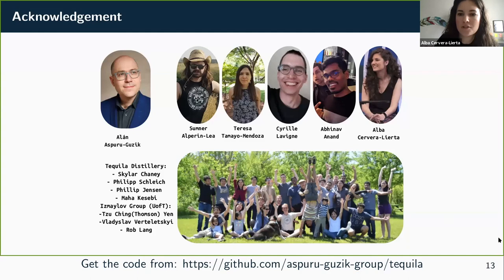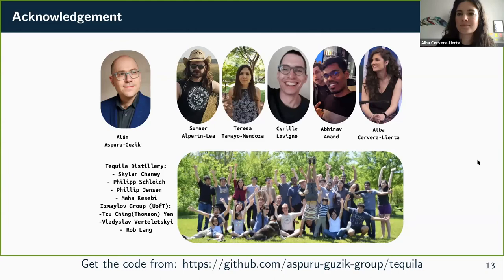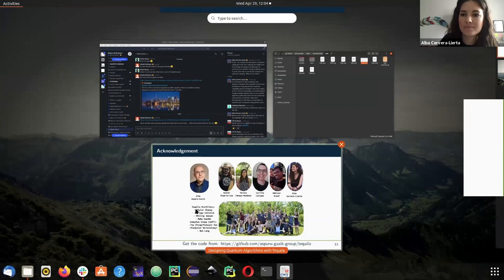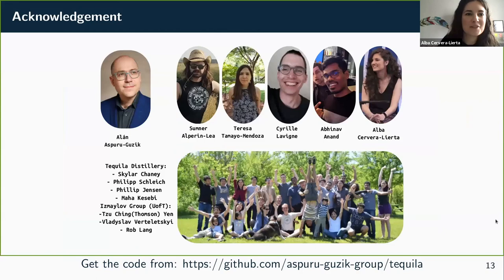Thank you, Jakob, for this presentation. If anyone has questions, please raise your hand. Now that Tequila is on GitHub, everybody can start playing with it. In the meantime, I have one question myself: can we define the gradients numerically in some way? For example, if I have some particular way to compute gradients, can I introduce that in Tequila?